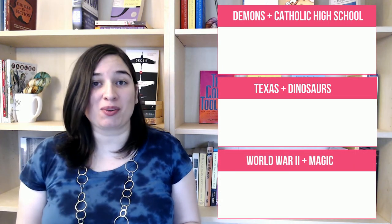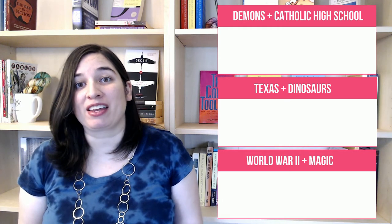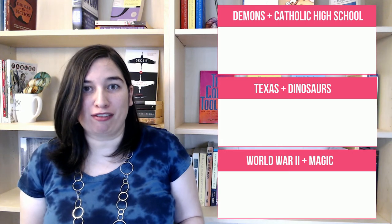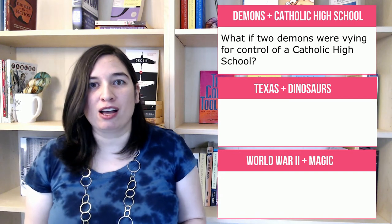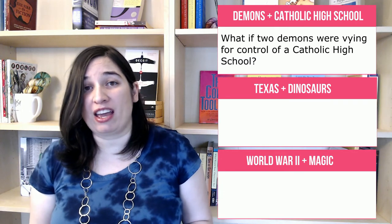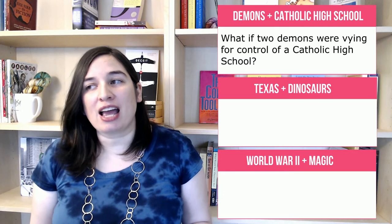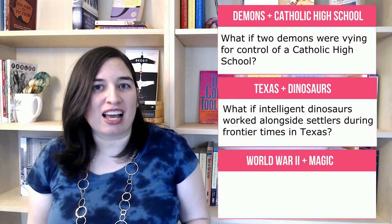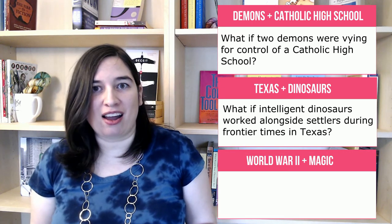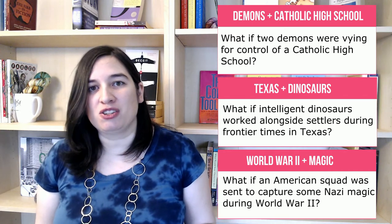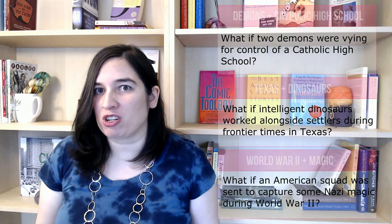So now we've got our three index cards with the combinations we found most compelling. Step three is to generate a 'what if' from each of these. So instead of just demons plus Catholic high school, we now have: what if two demons were vying for control of a Catholic high school? And instead of Texas plus dinosaurs: what if intelligent dinosaurs worked alongside settlers in frontier times in Texas? And instead of magic plus World War II: what if an American squad was sent to investigate and retrieve some Nazi magic during World War II? Some writers call this the magical what if — the compelling question that rockets you down the road to your story.